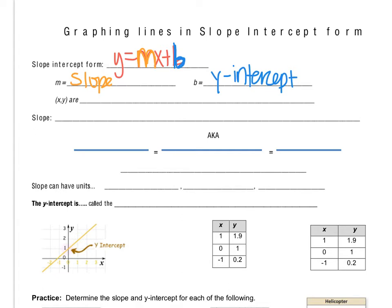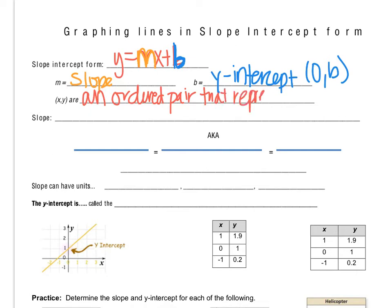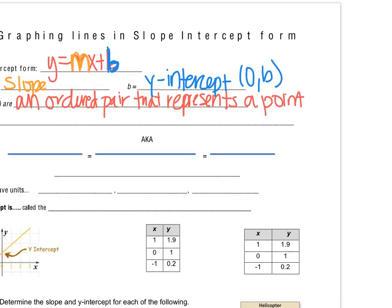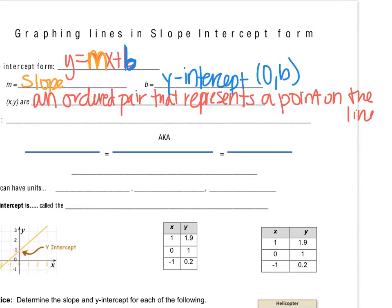It's important to remember that our y-intercept, our b, is always in the form of (0, b), where b is a number. In the equation, you also have x and y, and x and y are an ordered pair that represents a point on the line.